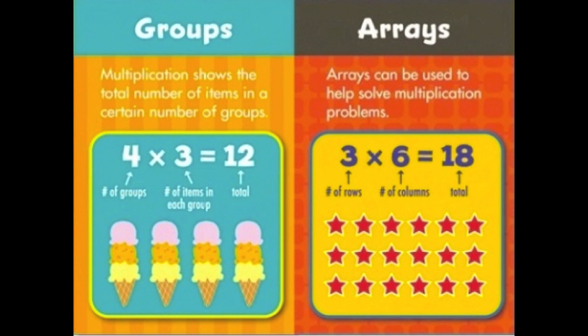Arrays can also be used to help solve multiplication problems. Look at the number sentence or equation given with the example of the array. The first number represents the rows in an array, and the next number represents how many columns are in the array. When creating an array, use the first number to represent the rows and the second number to represent the columns. We're going to pause here so we can further discuss and write about this in our math journal.